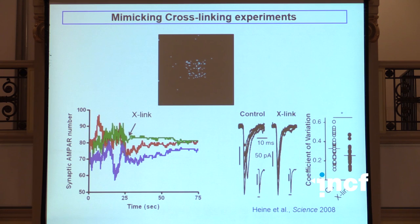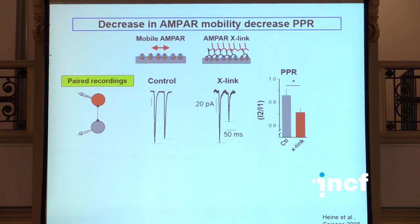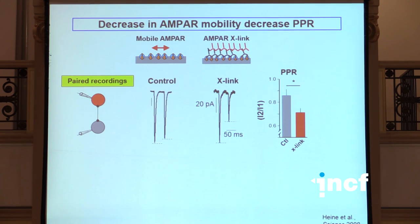I would like to really develop a little more onto that in the next few minutes to see how could actually fast receptor diffusion impact fast synaptic transmission. Coming to this last part - what's the actual function of fast AMPA receptor movement in fast synaptic transmission? Probably the most interesting finding we had on that aspect came in a paper we published six years ago, where by immobilizing AMPA receptors by cross-linking them with antibodies, we found a very strong impact on short-term plasticity.